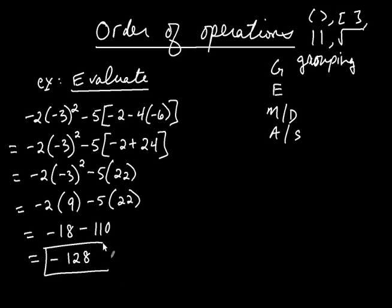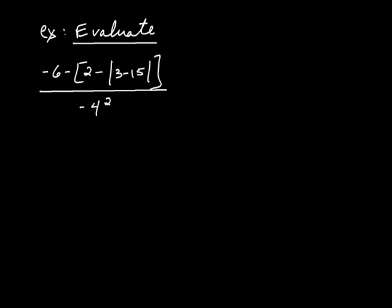That was a complicated one involving many different types of operations. Let's try another one. Evaluate: negative 6 minus, bracket, 2 minus the absolute value of 3 minus 15, end absolute value, end bracket, all over negative 4 squared.